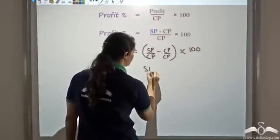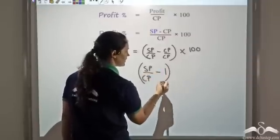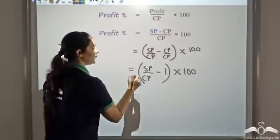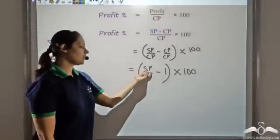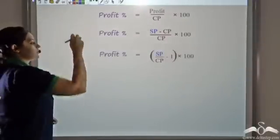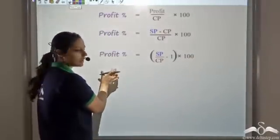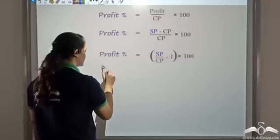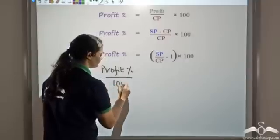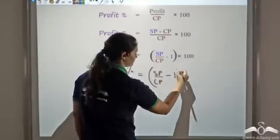So I get SP upon CP minus 1 (since CP/CP = 1), times 100. So profit percentage is (SP upon CP minus 1) times 100. Next, this whole expression is being multiplied by 100, so I can bring 100 to the other side: profit percentage divided by 100 equals SP upon CP minus 1.